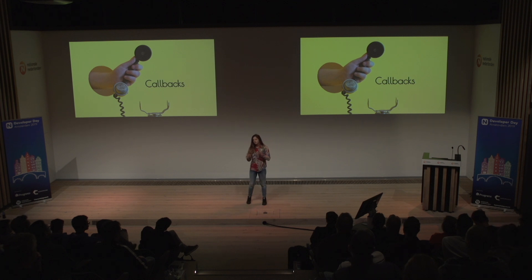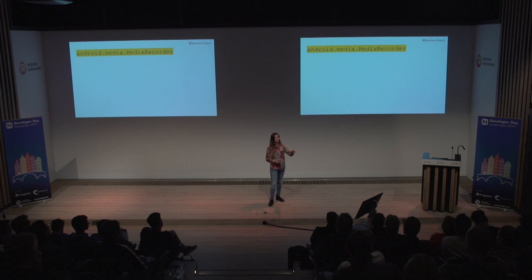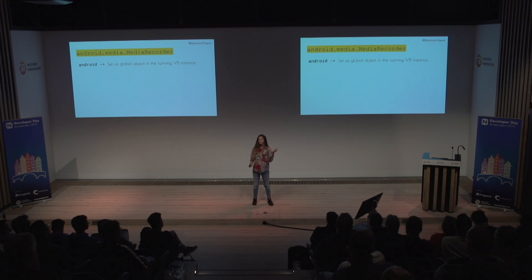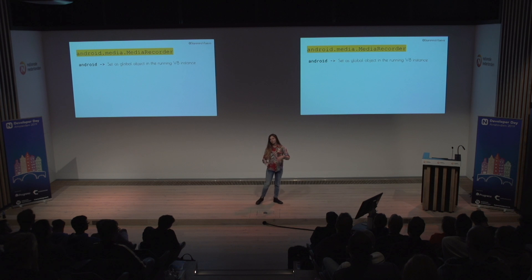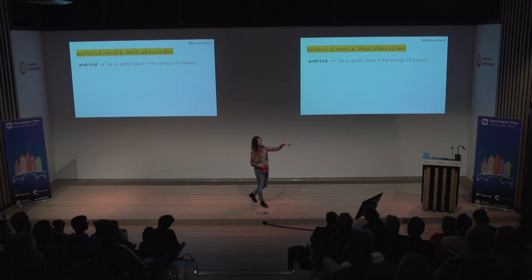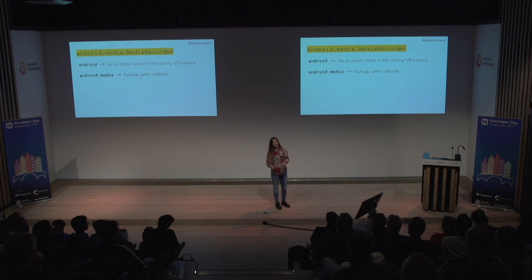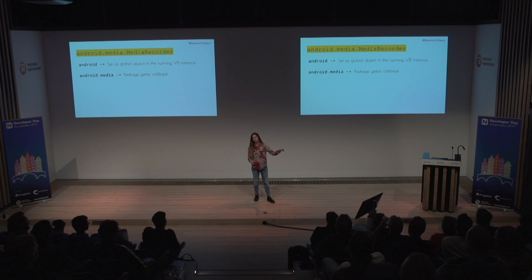The callbacks are a really important part — they're the methods we use to hook into V8. Take our line of code again. 'Android' is a global object because when the NativeScript runtime reads the metadata on launch, it sees there is a global package called Android. Then Android becomes a global variable in the JavaScript world and we set that in the running V8 instance. When we query Android.media, a callback attached to Android is invoked, which tries to find 'media' inside the Android package and returns an object representing what Android.media contains.